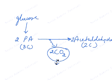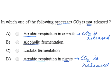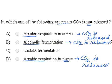So here also, carbon dioxide is released. These two acetaldehyde molecules then change into ethyl alcohol, which is also a two-carbon compound — so two molecules of ethyl alcohol. But in this process, carbon dioxide is given out. Therefore, in alcoholic fermentation, carbon dioxide is released. Let us now take option C — lactate fermentation.